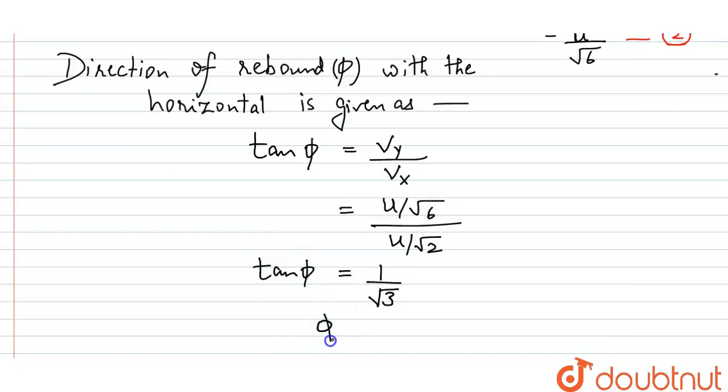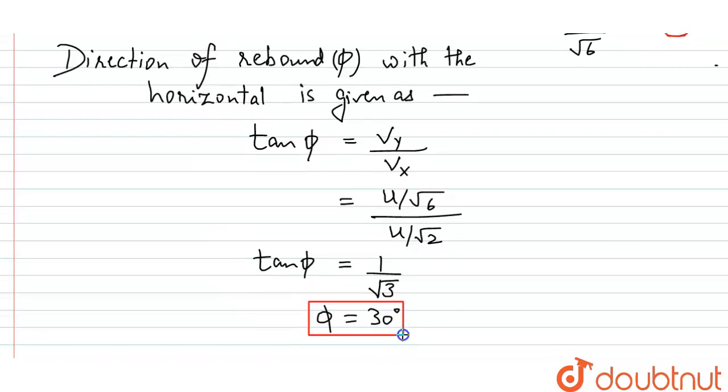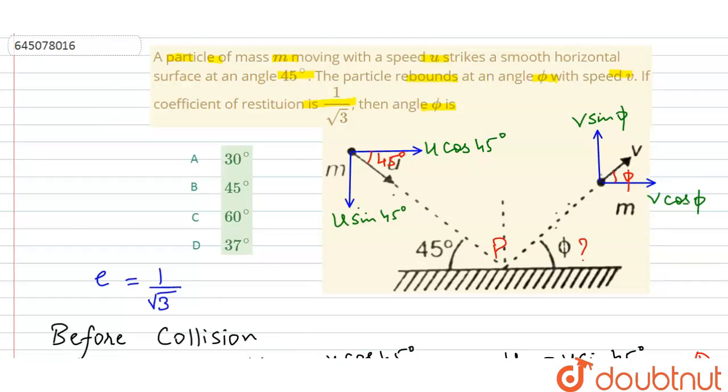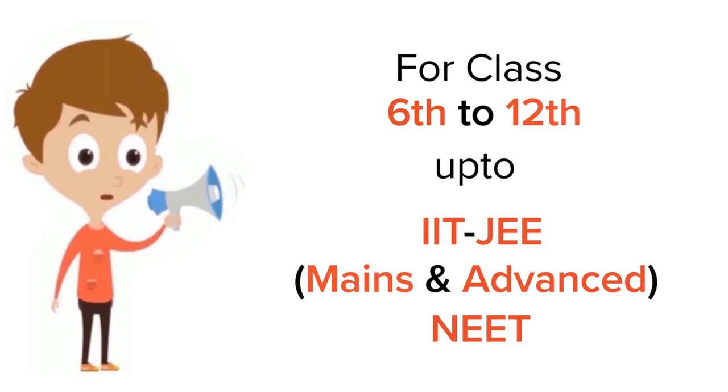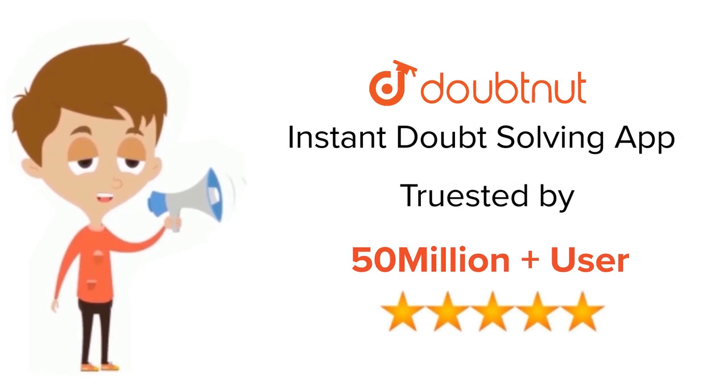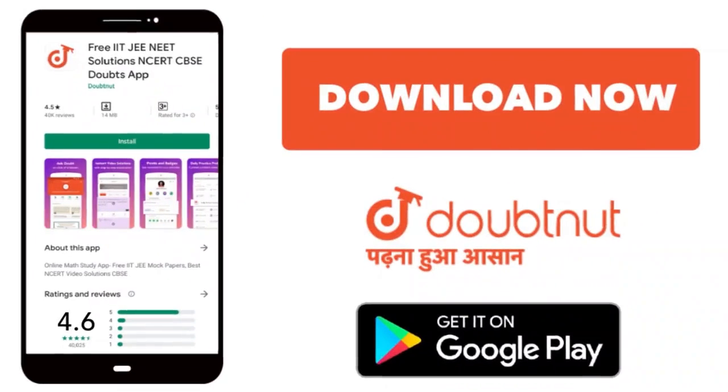So phi I will get which is equals to 30 degrees. So this is the answer. I can also take the correct option, that is option number A. Thank you students. For class 6-12, IIT JEE and NEET level, trusted by more than 5 crore students, download Doubtnet app today.